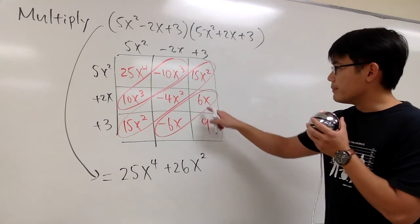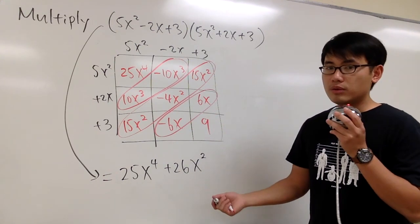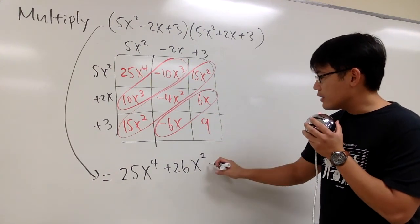And then for the x term, 6x minus 6x, once again, that's 0. So we don't have the x term. At the end, we have the plus 9.